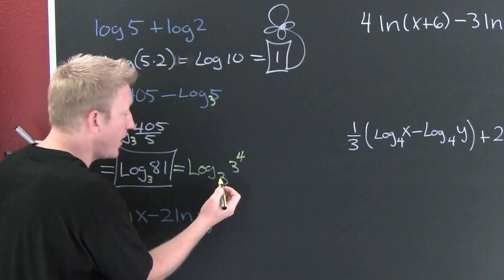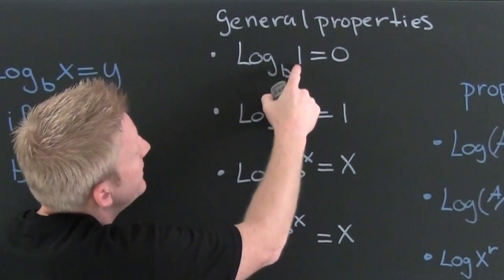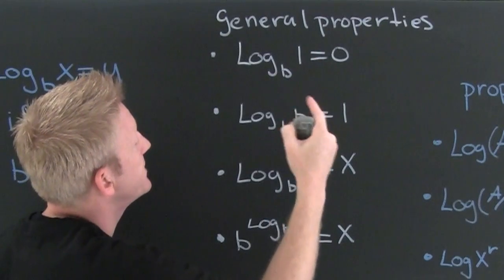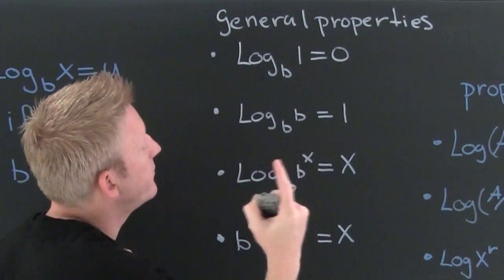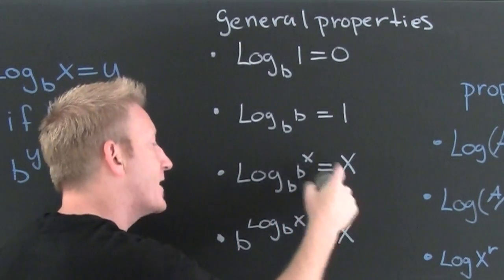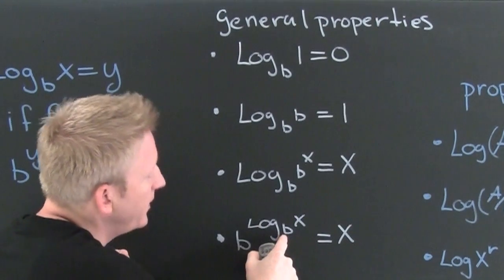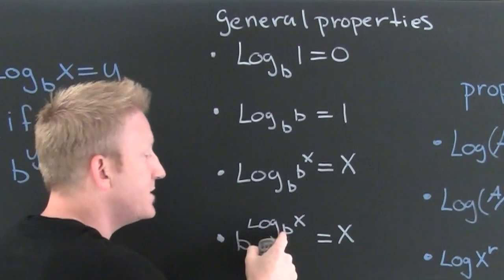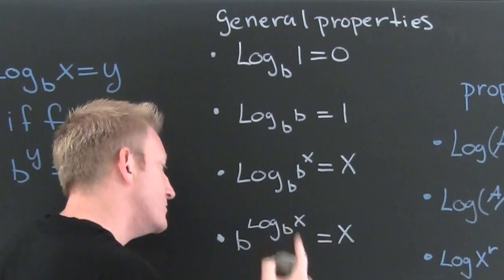And then that's a special logarithm property. Some general properties of logarithms. Log base b of one is zero every single time. Log base b of b is one every single time. Log base b of b to the x is x every single time. Log base b, ah, b to the log base b of x is x every single time.